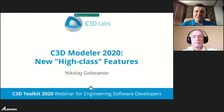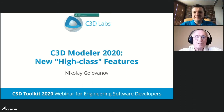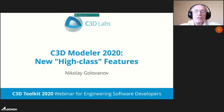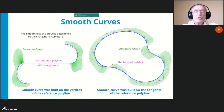Nikolai will tell you about the high-class features of C3D Modeler — the most difficult and high-class functionality of a modeling kernel. He will cover construction of smooth curves, managing the distance of offset curves and surfaces, extension of multiple boundary faces simultaneously, merging smoothly joined faces into one phase, construction of conic section surfaces, and filleting edges along a reference curve.